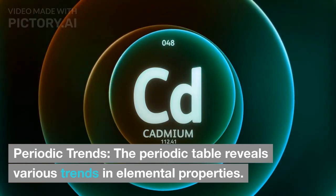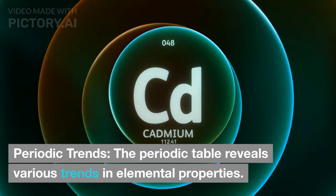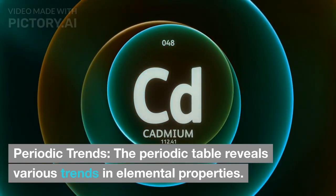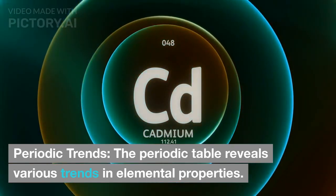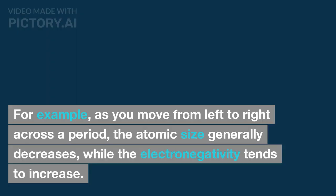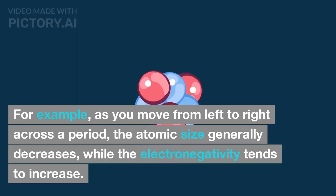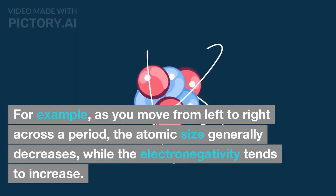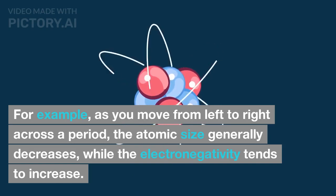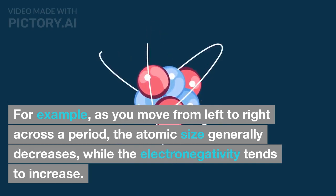The periodic table reveals various trends in elemental properties. For example, as you move from left to right across a period, the atomic size generally decreases, while the electronegativity tends to increase.